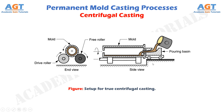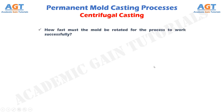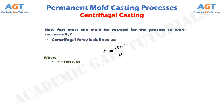How fast must the mold be rotated for the process to work successfully? The centrifugal force is defined as F equals M·V² divided by R, where F represents force expressed in newtons, M represents mass expressed in kg, V represents velocity expressed in meters per second, and R represents the inside radius of the mold expressed in meters.